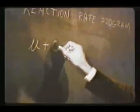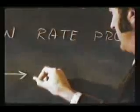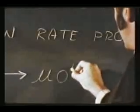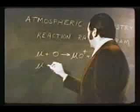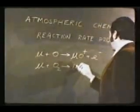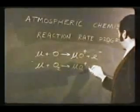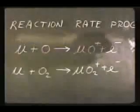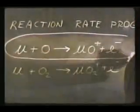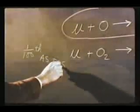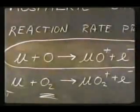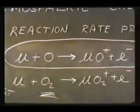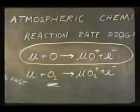A uranium atom combining with an oxygen atom to form a uranium oxide ion plus an electron. And a uranium atom combining with an oxygen molecule to form a uranium dioxide ion and an electron. The first reaction is very fast. The rate of the second reaction is almost a hundred times slower, but still significant at altitudes where molecular oxygen exists in abundance. These reactions not only yield free electrons, but probably also produce abundant infrared radiation from the excited ions.